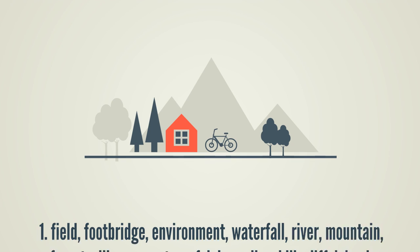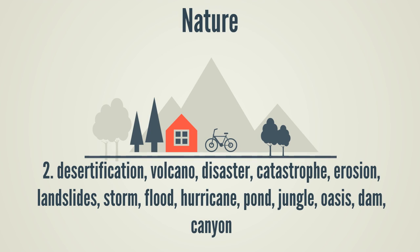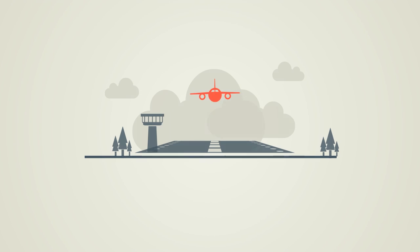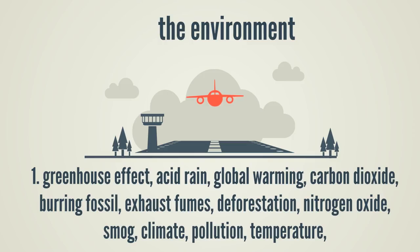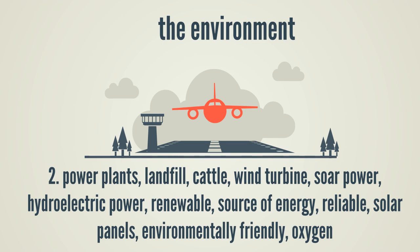Field, Footbridge, Environment, Waterfall, River, Mountain, Forest, Village, Coast, Reef, Lake, Valley, Hill, Cliff, Island, Peninsula, Earthquake, Avalanche, Tornado, Typhoon, Desertification, Volcano, Disaster, Catastrophe, Erosion, Landslides, Storm, Flood, Hurricane, Bond, Jungle, Oasis, Dam, Canyon. The Environment: Greenhouse Effect, Acid Rain, Global Warming, Carbon Dioxide, Burning Fossil, Exhaust Fumes, Deforestation, Nitrogen Oxide, Smog, Climate, Pollution, Temperature, Power Plants, Landfill, Cattle.